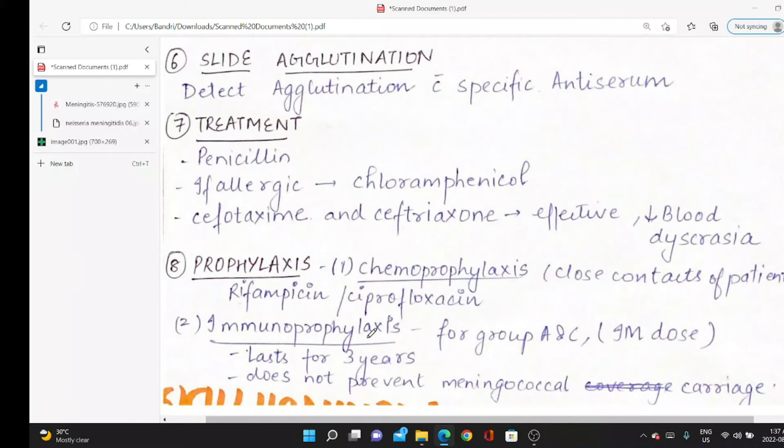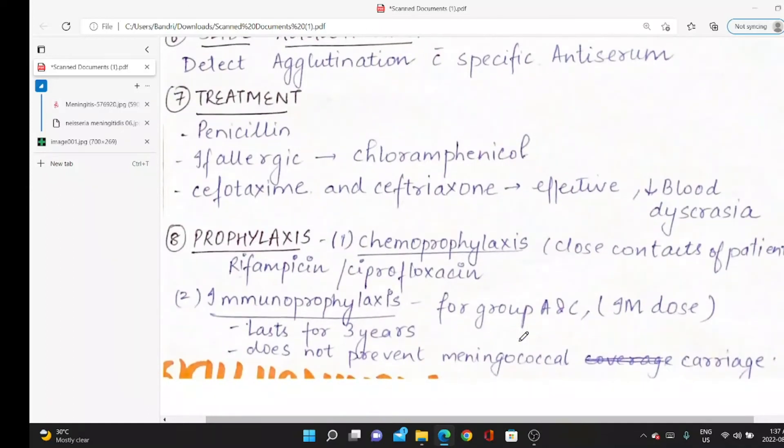Immunoprophylaxis for group A and C: we have vaccinations given by intramuscular route. Protection lasts for 3 years. But this vaccination does not prevent meningococcal carriage—even if vaccinated, you can still carry the bacteria and transfer it to others.